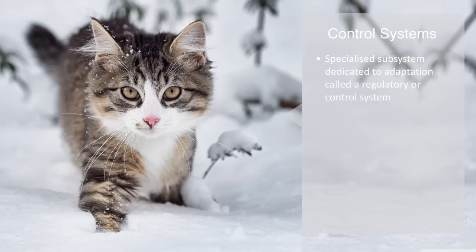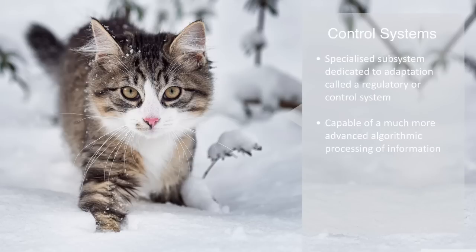For example, an animal like a cat has a nervous system dedicated to sensing, processing, and responding to information it receives from its environment. With an electrical nervous system, the creature is able to respond very rapidly and is also capable of a much more complex algorithmic processing of information. With this control system, it is able to generate a wide variety of responses to deal with a rapidly changing environment, where it may be presented with a large number of different scenarios as a creature like our cat might encounter during the dynamic activity of hunting.